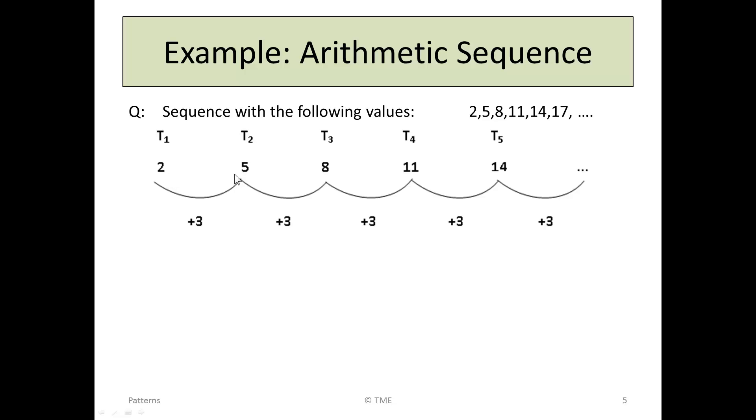As we move from term 1 to term 2, we can identify that we can get from 2 to 5 by adding 3, because 5 minus 2 is 3. Similarly, by moving from 5 to 8, we can add 3. 8 minus 5 is 3. From 8 to 11, it's the same again. We can see this pattern being consistent. And when the pattern is consistent, it's called an arithmetic sequence, because there's a common difference between each of the terms.